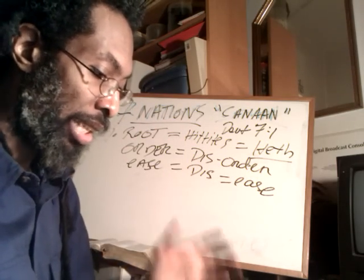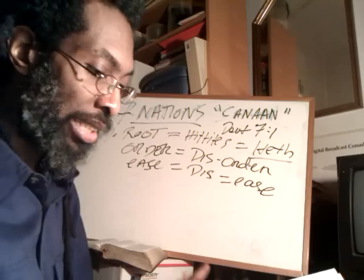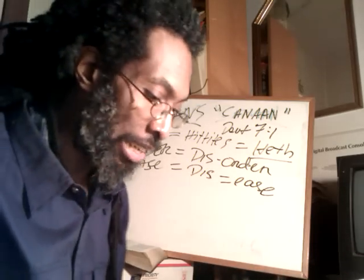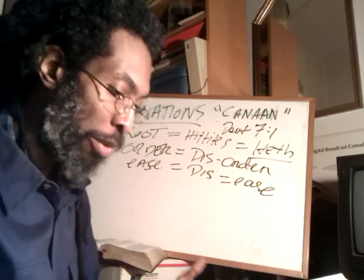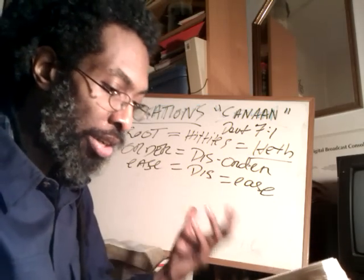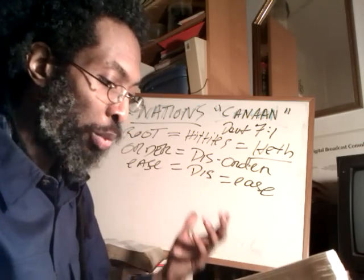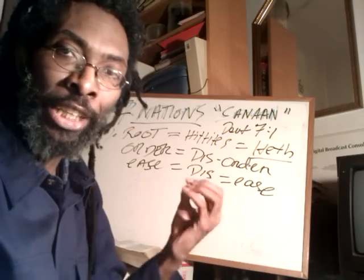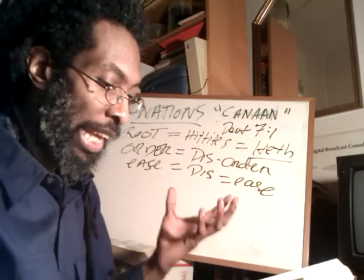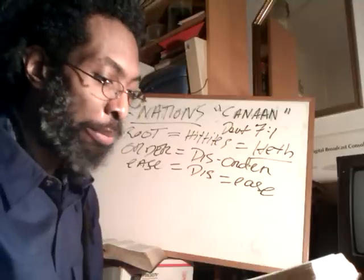Heth was the son of Canaan, grandson of Ham — Genesis 10:15. Ham, the son of Noah, pertains to the physical, the five-cycle or the physical in man. It was from the children of Heth that Abraham purchased a burial place for Sarah.